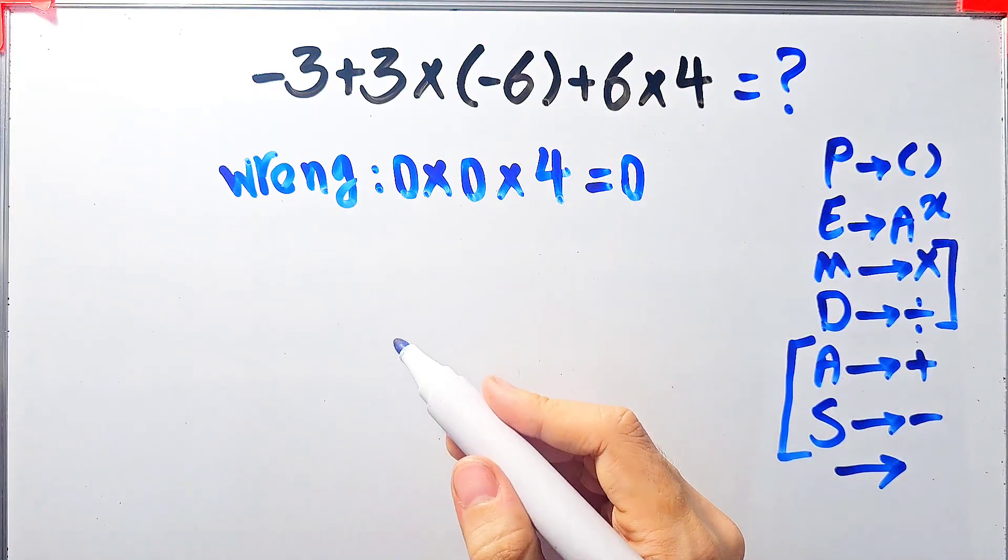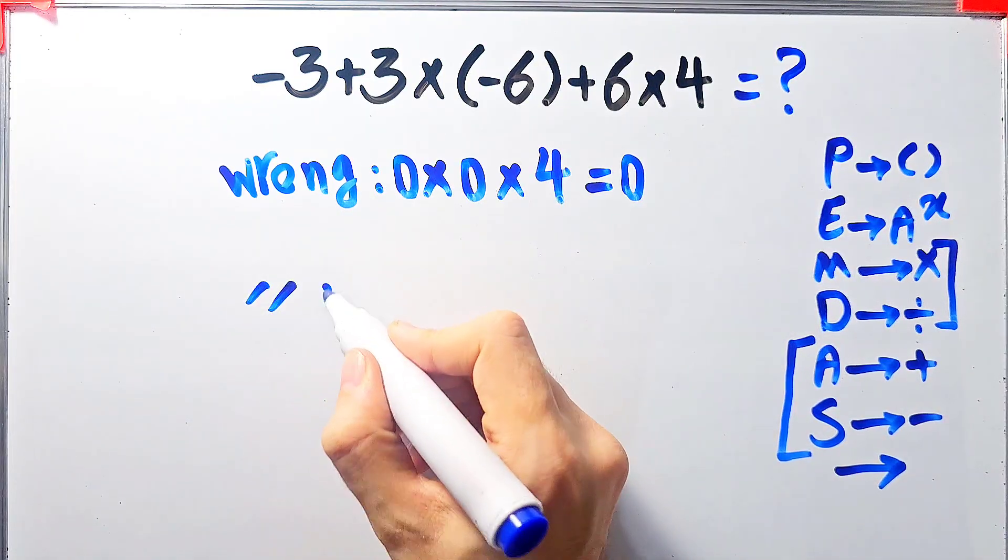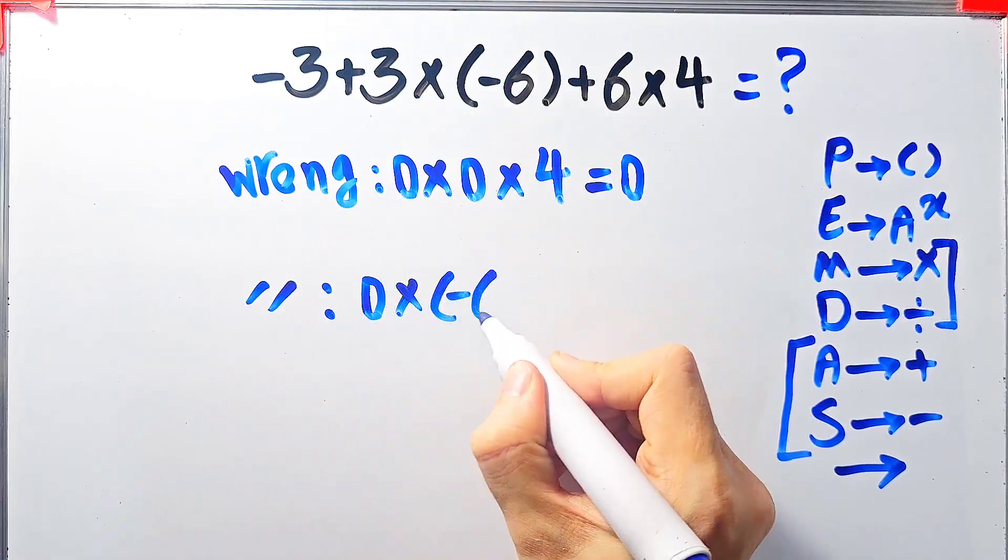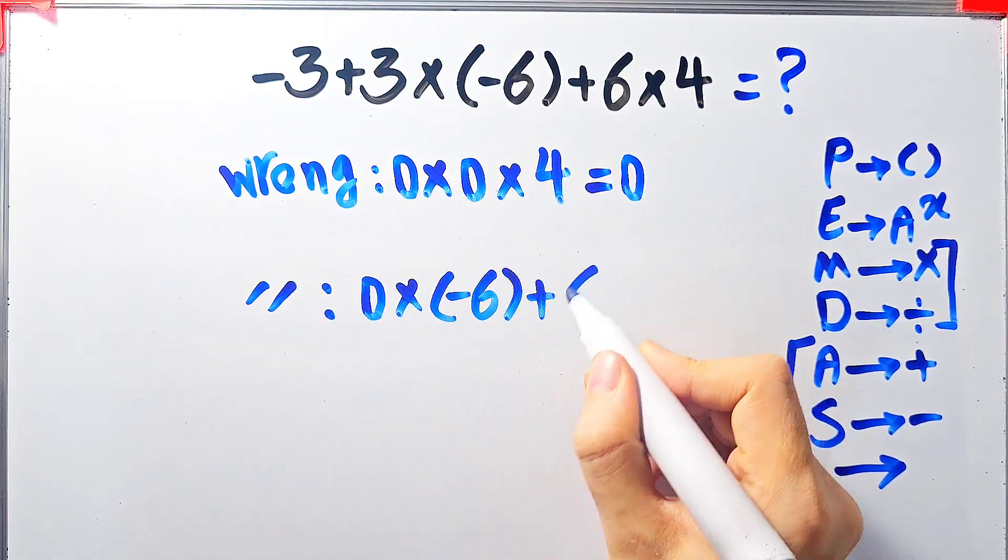Again, some people solve this question like this. They start from the left and simplify the question. Negative 3 plus 3 equals 0, 0 times negative 6 plus 6, then times 4.